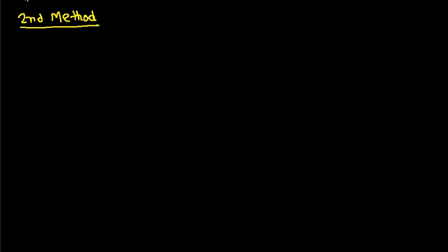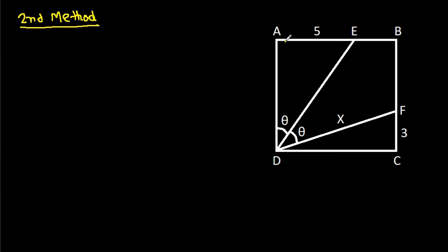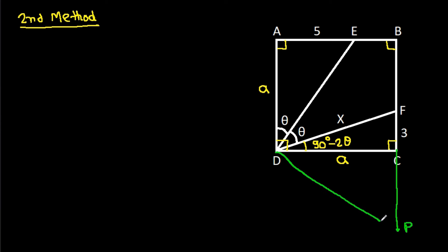For the second method, we know that these angles will be 90 degrees, and this angle will be 90 degrees minus 2 theta. If AD is A, then CD is also A. Now, if we extend BC to a point P and join DP, such that CP equals 5. CP equals 5 — this is our construction.